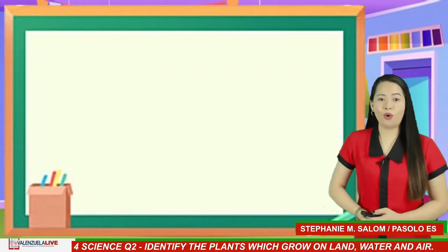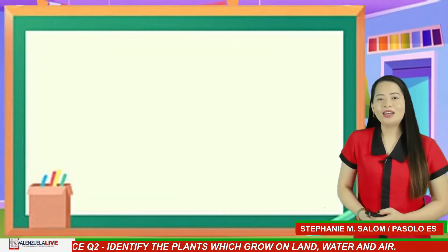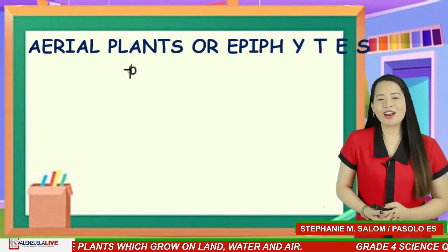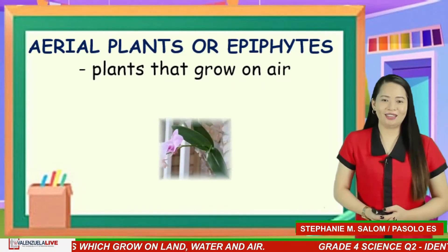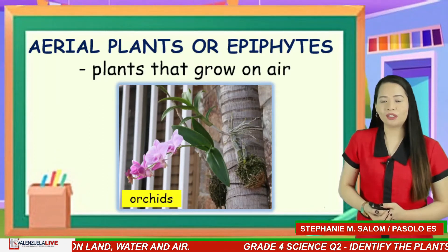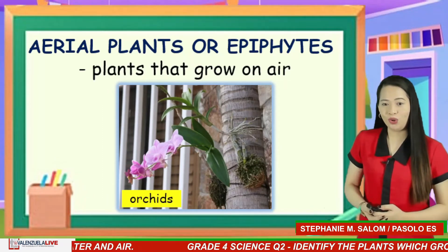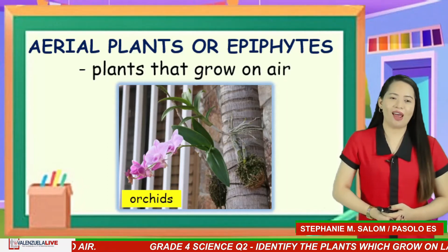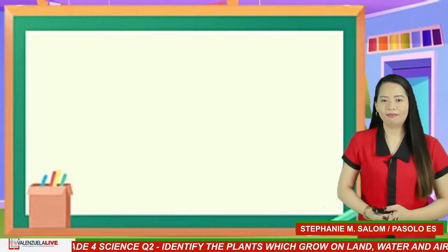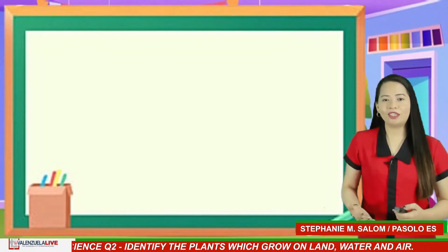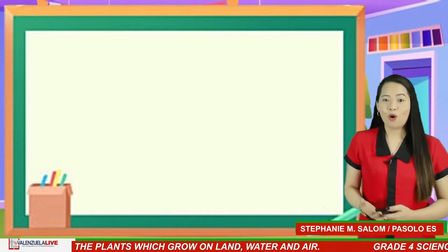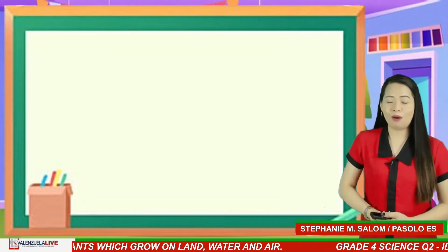Aside from the plants that grow on land and water, some plants grow on air. They are called aerial plants or epiphytes. These are plants that do not need soil for their roots. Instead, they absorb moisture and nutrients from the air and rain. Some aerial plants have basal roots, which they use to cling on rocks, trees, poles, or other plants without harming them at all.